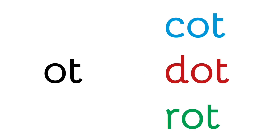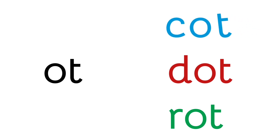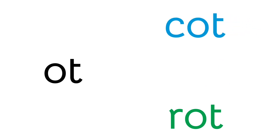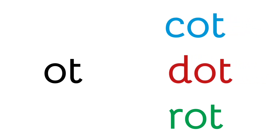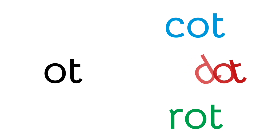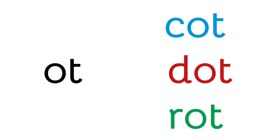Now you know how to spell different words by using OT. You have cot, dot, rot. Cot. Dot. Rot.